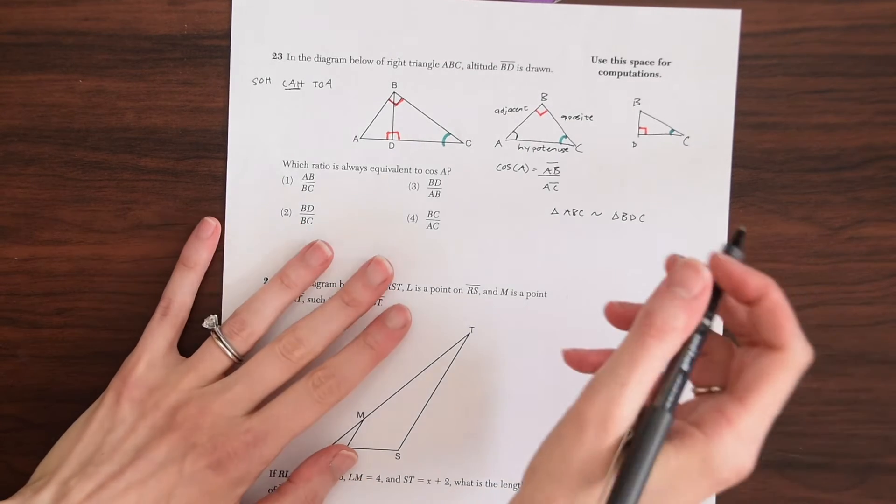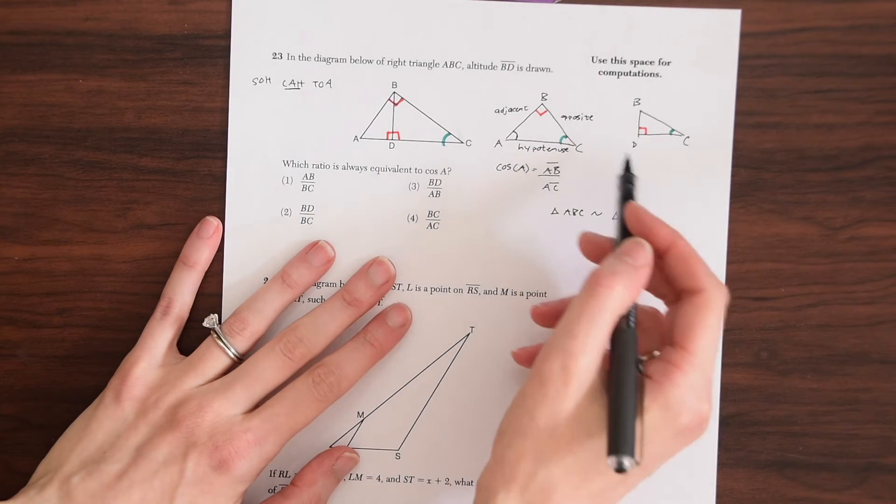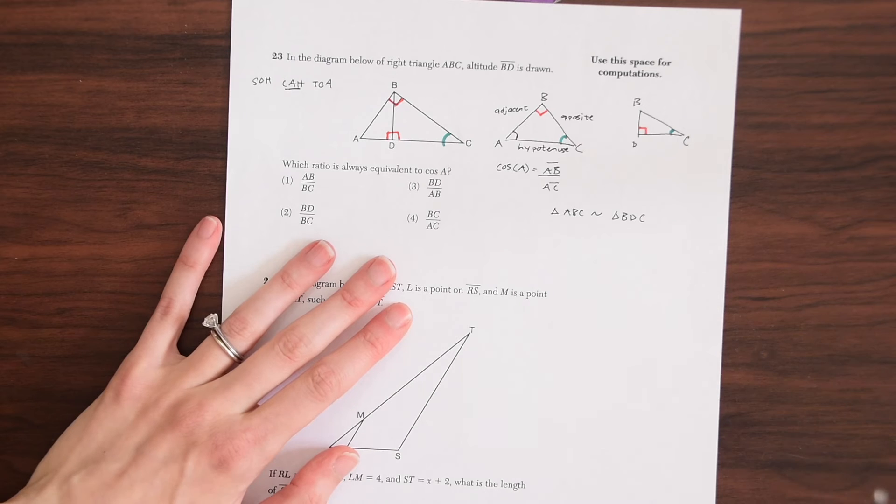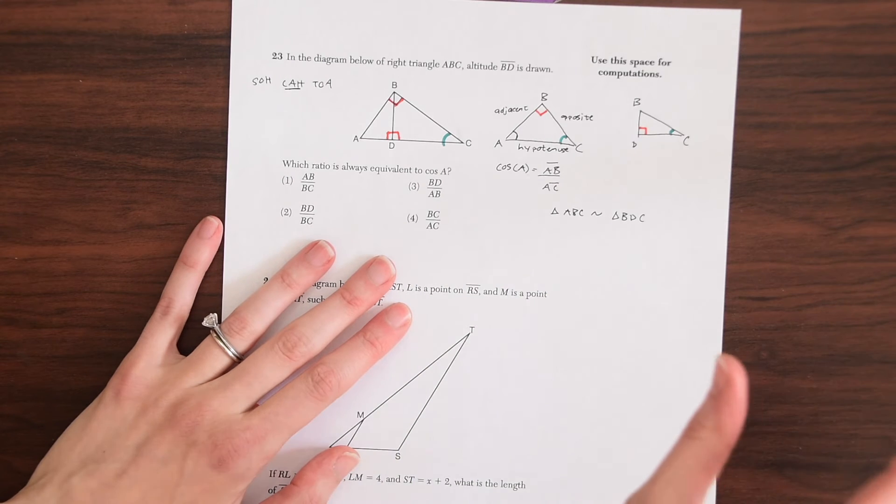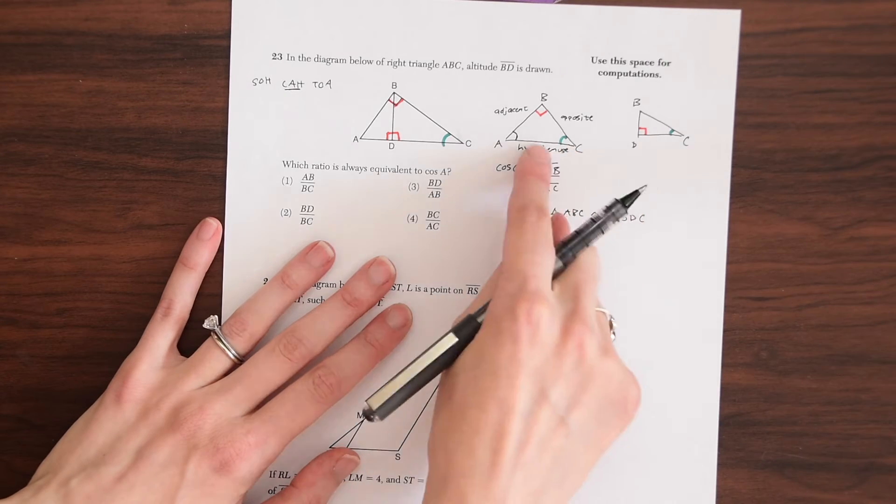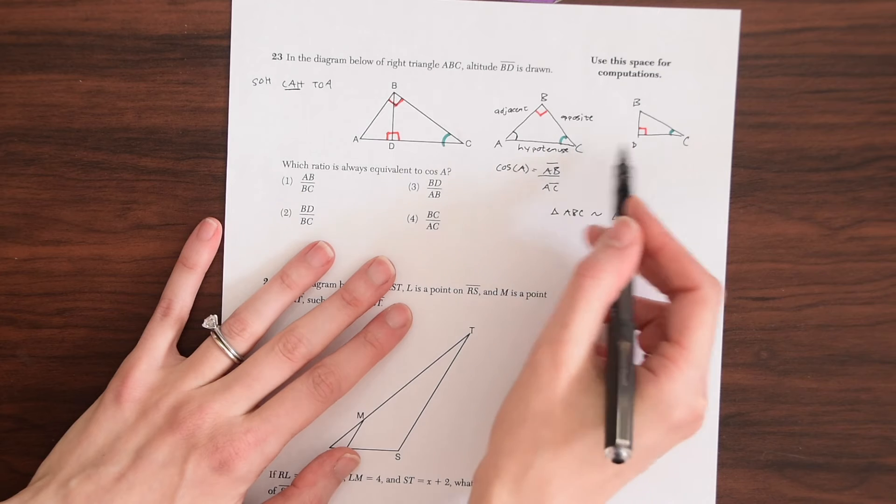So now we need to find how to find the equivalent ratio of cosine of A in this new triangle. So if we know that they are similar, that means all the angles are congruent in this similar triangle, these two similar triangles.